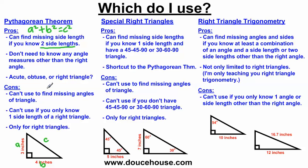The cons of the Pythagorean Theorem are: you can't use it to find missing angles. In other words, I cannot use the Pythagorean Theorem to figure out what these angle measures are. It's only limited to finding a third side. You also can't use it if you only know one side length — if I did not know this is three inches on this particular triangle, then I'm stuck.